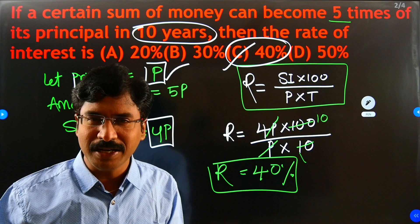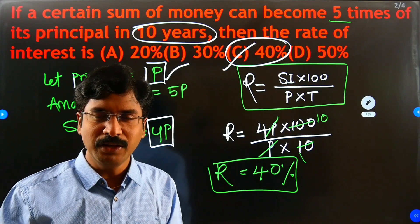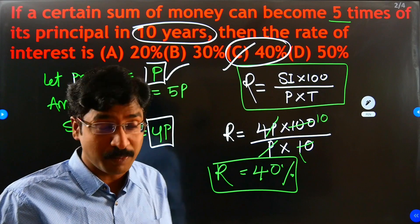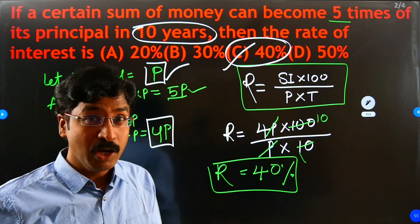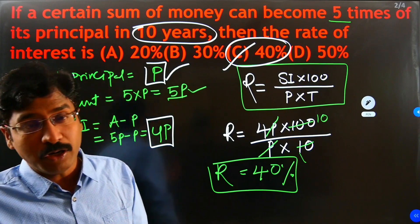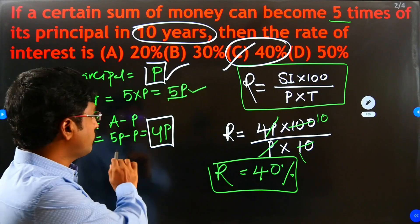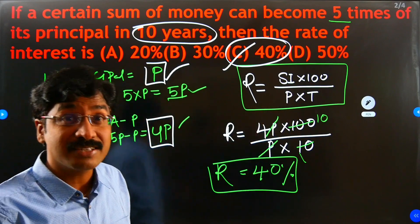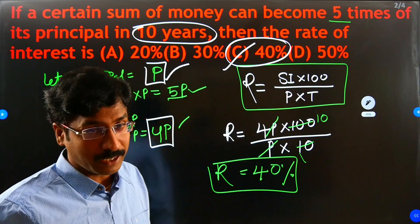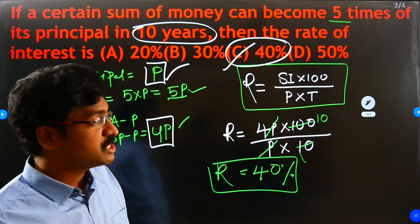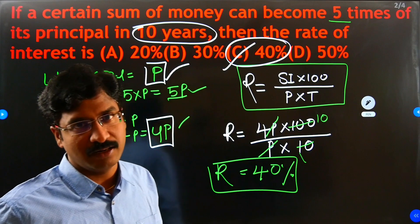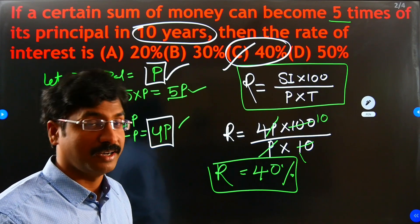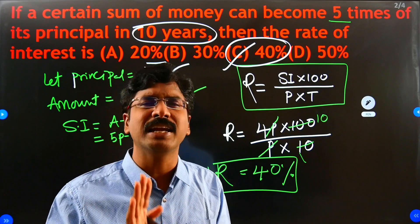My dear students, we did not know the value of the principal and we did not know the value of SI. We only knew the relation between the principal and the amount. We let the principal = P, so the amount = 5P. Then SI = 5P − P = 4P. Applying the rate of interest formula: R = (4P × 100) / (P × 10), P cancels, giving 40%. Got the point? If you do the sum this way, it is very easy.